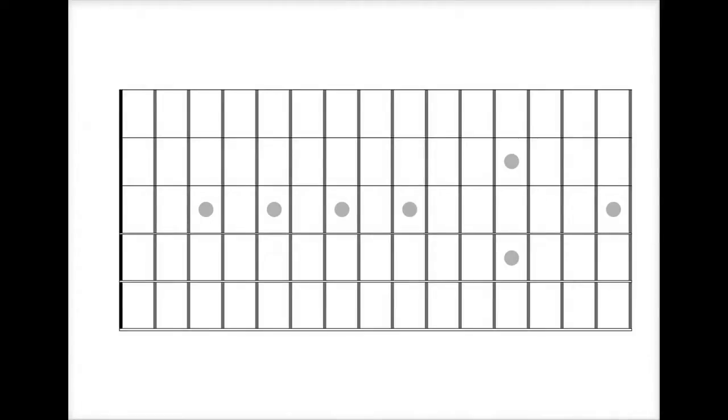Here we go with the E major scale. Remember the major scale formula is whole, whole, half, whole, whole, whole, half. If you don't have that memorized, you've got to get that memorized. It'll make life a lot easier.